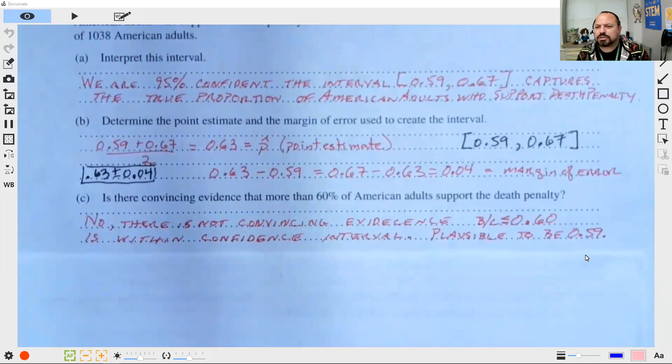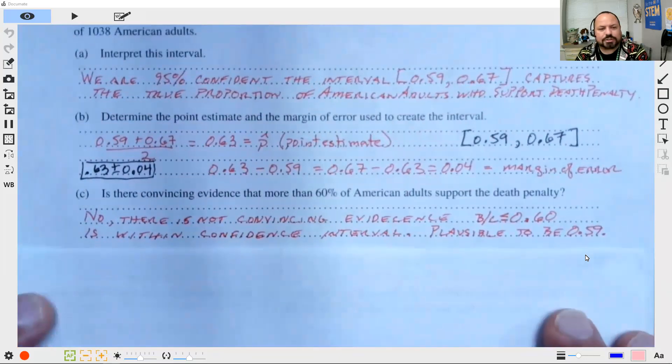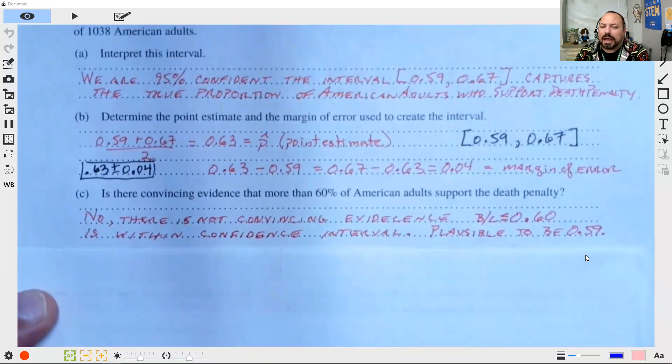So that gets us our example on working with a confidence interval for proportions and just working with these simple basics on interpreting, determining if we have evidence, and determining the point estimate and the margin of error. In other videos, we'll look at our confidence intervals for means, and then we'll also look at how we can compute these confidence intervals.